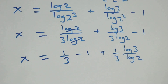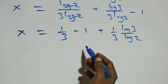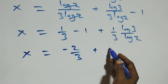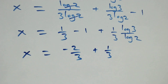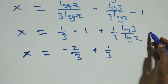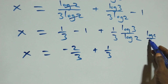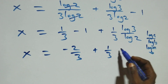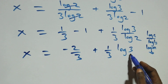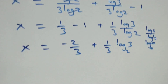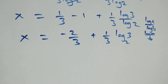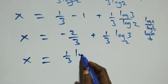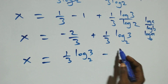From here, 1 over 3 minus 1 becomes minus 2 over 3, then plus 1 over 3 multiplied by log 3 over log 2. When we apply the change of base formula: log a over log b is the same thing as log a to base b. So log 3 over log 2 becomes log 3 to base 2. This gives us x equals 1 over 3 times log 3 base 2, then minus 2 over 3.